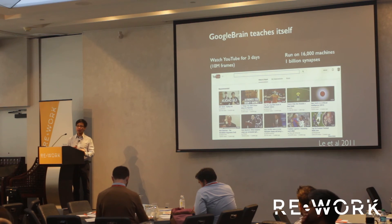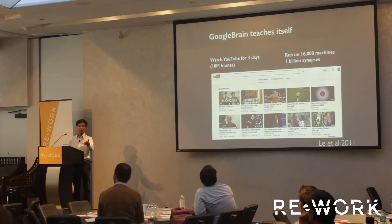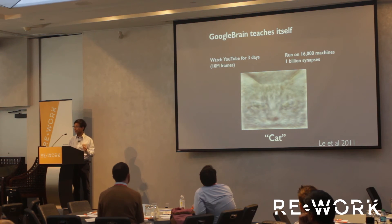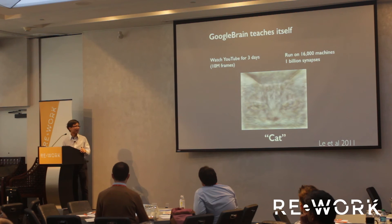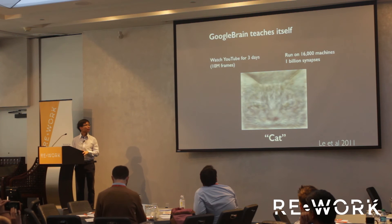One of the first tests we did was automatic feature learning on YouTube. We basically had Google Brain watching YouTube for weeks — every moment it would just fetch a YouTube video and watch it, like a grad student. What it figured out was that there's an important concept in YouTube videos called 'cat' — because maybe 80% of YouTube videos have cats or something like that. The system we trained used about 16,000 machines and had about one billion synapses. This was around 2011.